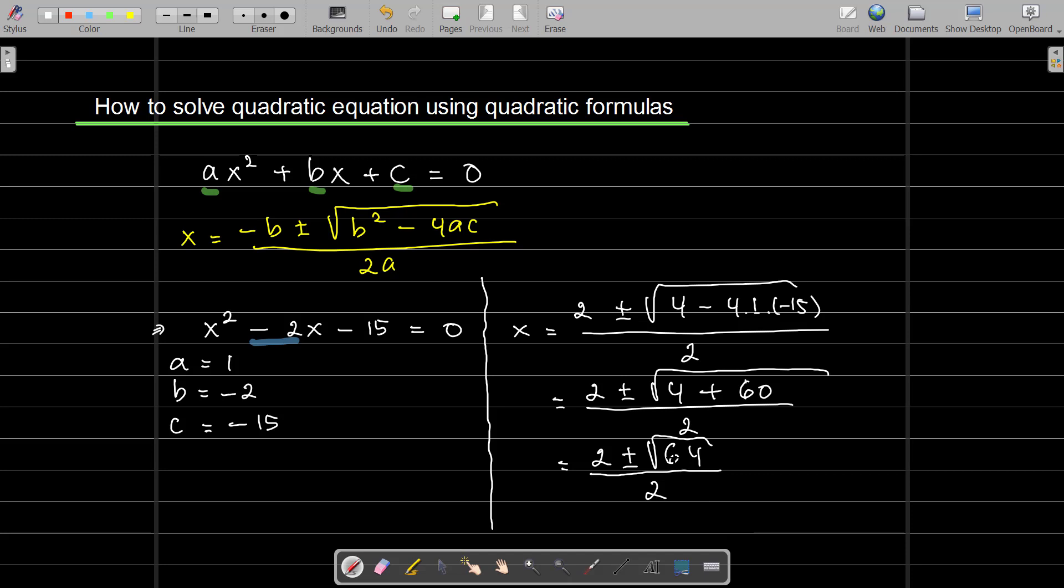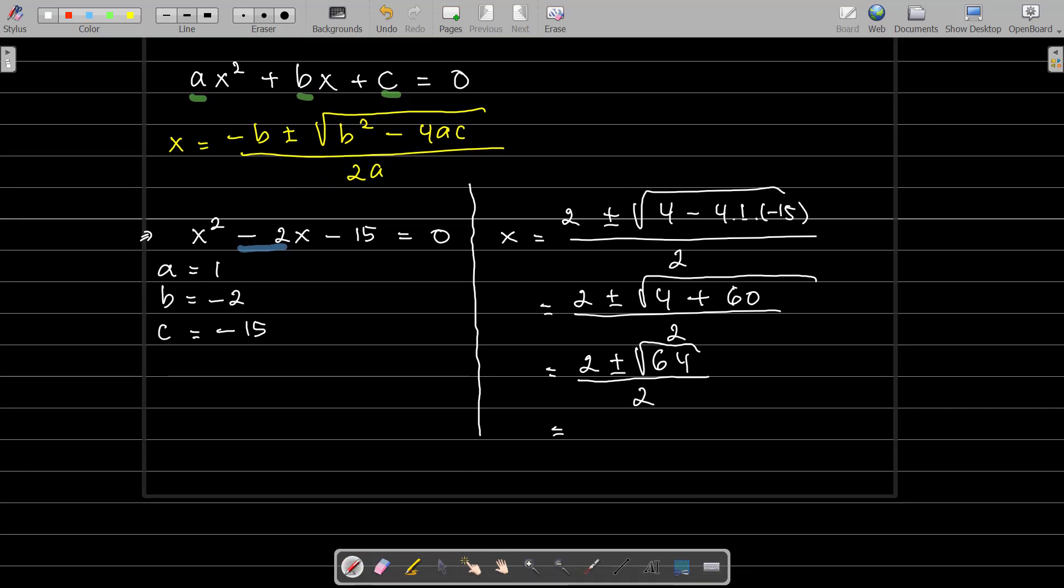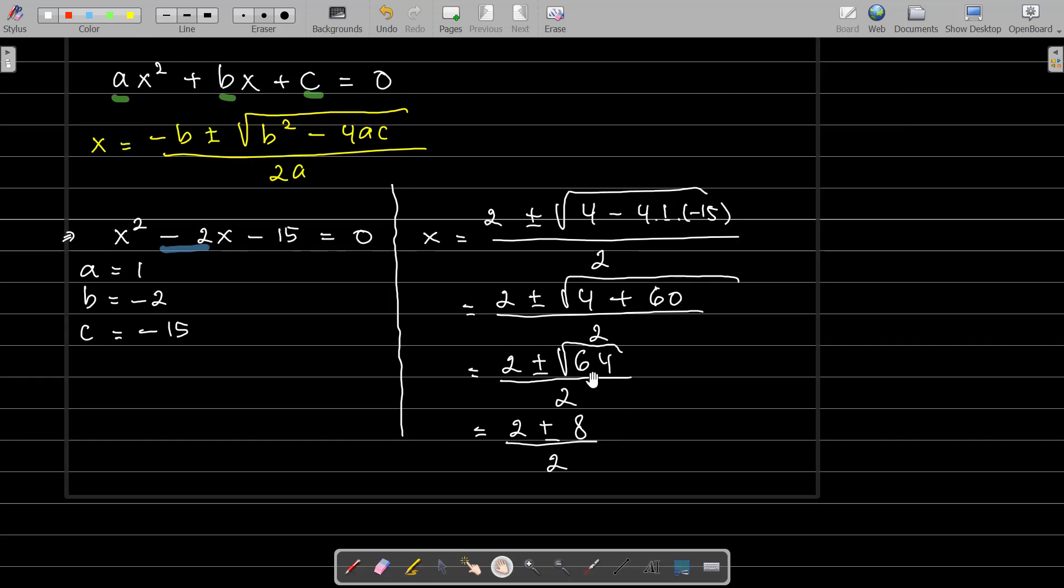Now what you need to do next is you need to find the square root of 64. The square root of 64 is 8. So I can write, equal, I need more space. Okay, so 2 ± 8 / 2. Once you get this part, you want to separate it into two expressions.